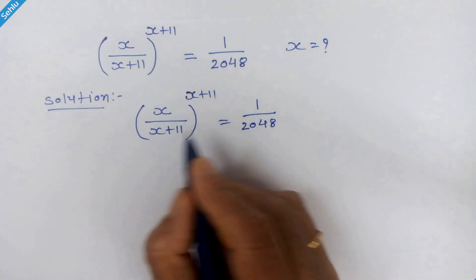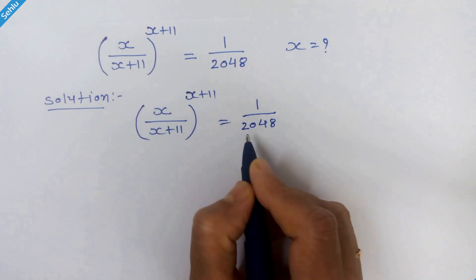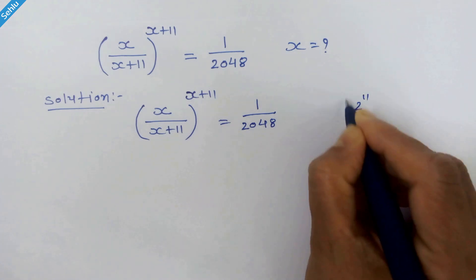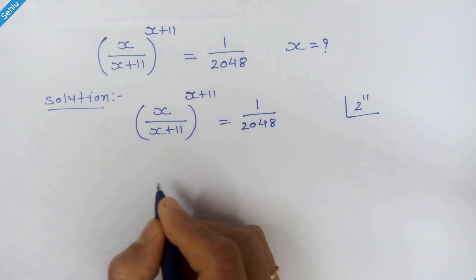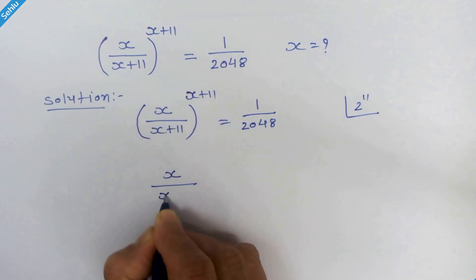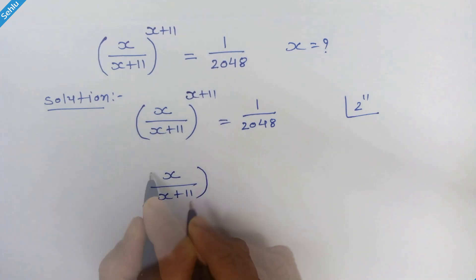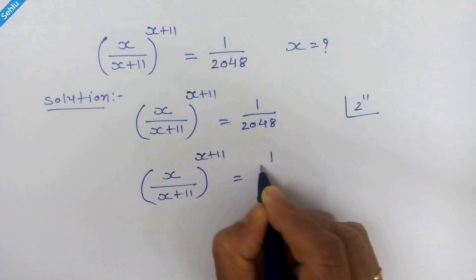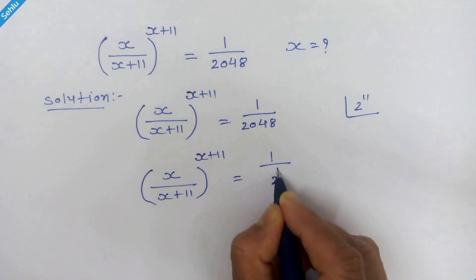We will try to achieve a similar formation both sides. Here 2048 can be written as 2 raise to 11. So let's put that. Is equal to 1 upon 2 raise to 11.